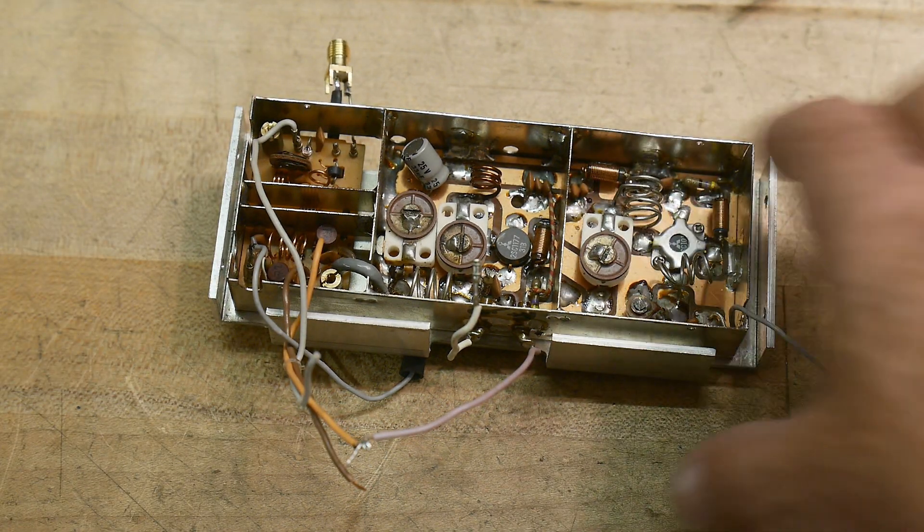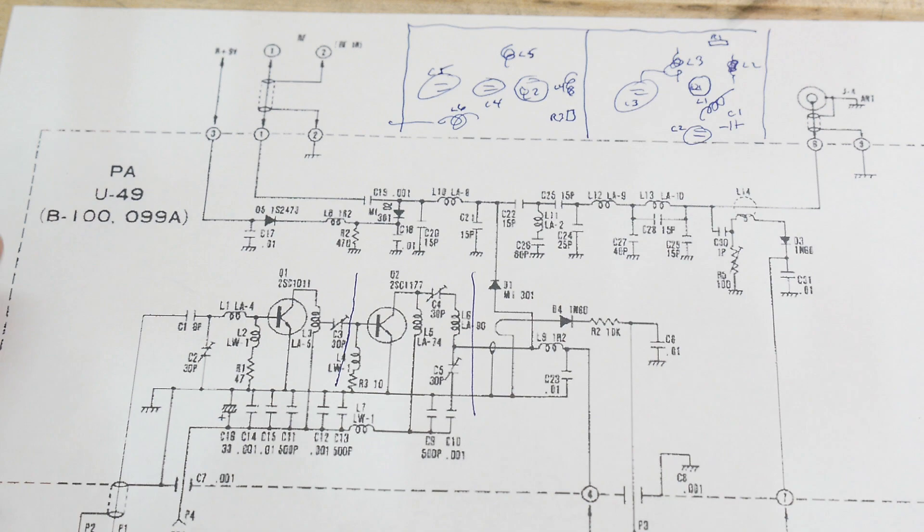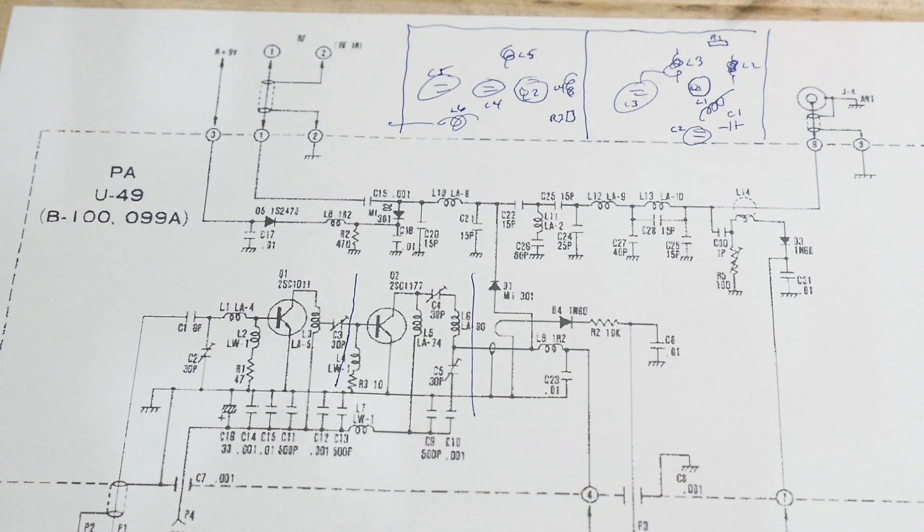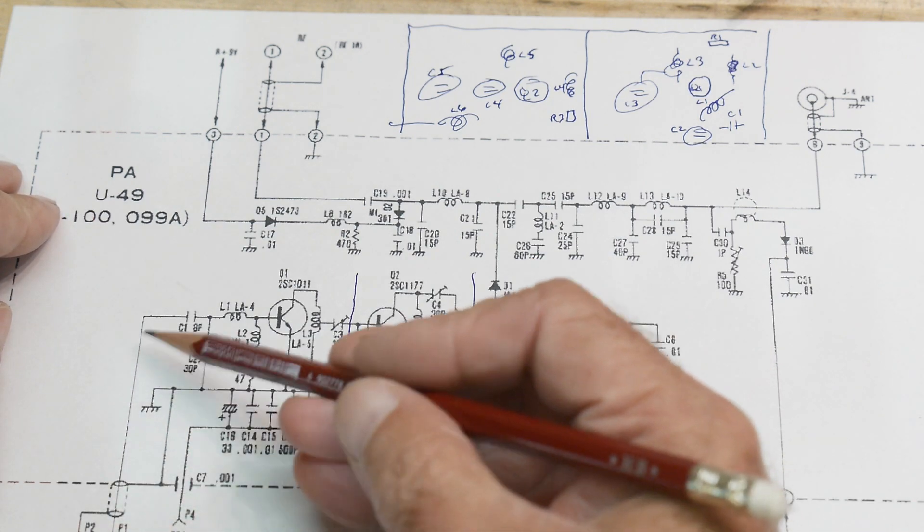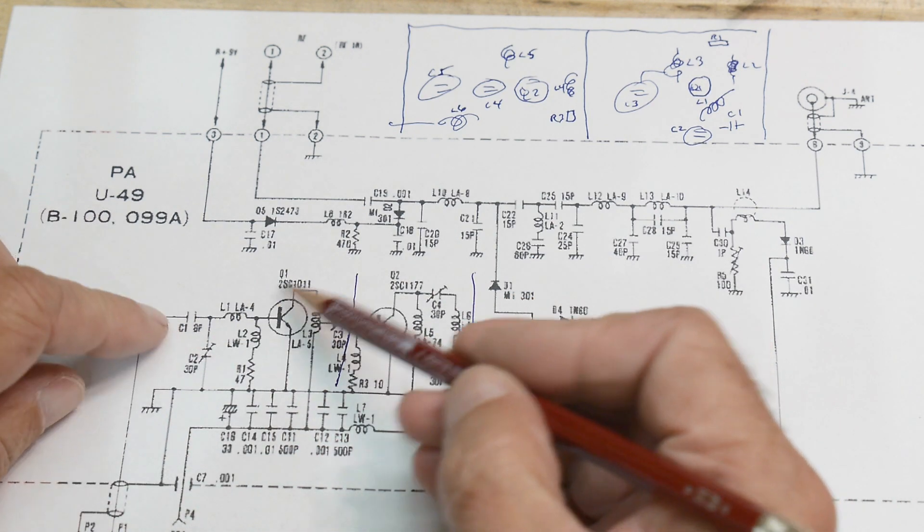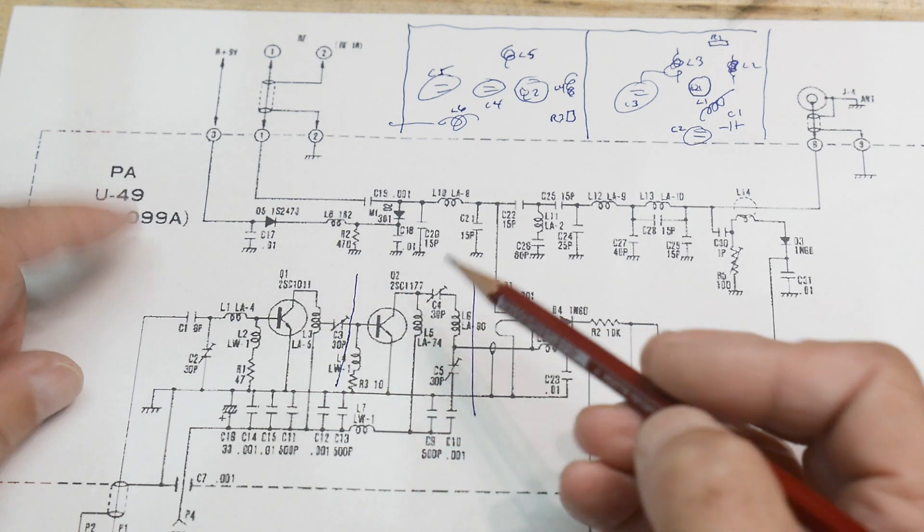So let's take a look at the schematic. So this is the connector coming in. It goes through the pre-driver, and then the driver, and final amplifier.